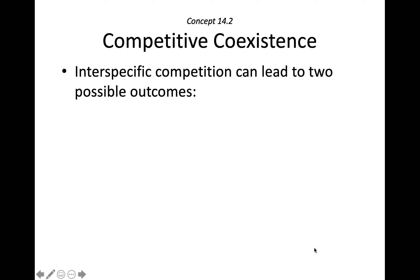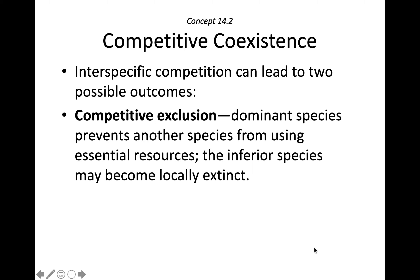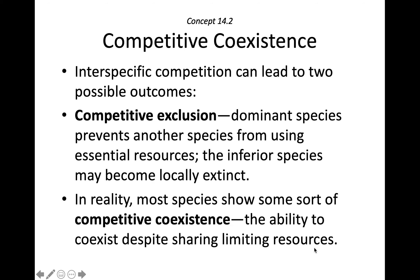Interspecific competition can have two possible outcomes. The first is competitive exclusion, like Tilman observed, where the dominant species prevents another species from using essential resources and the inferior species usually becomes extinct. In reality, most species are able to achieve competitive coexistence, where the ability to coexist depends on how they are able to split up or share limiting resources.